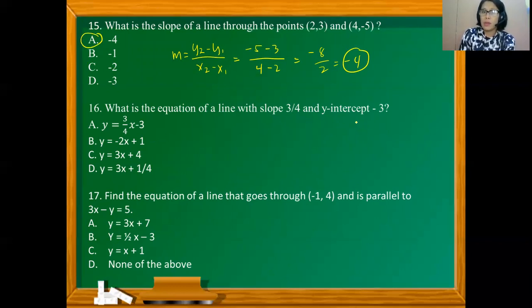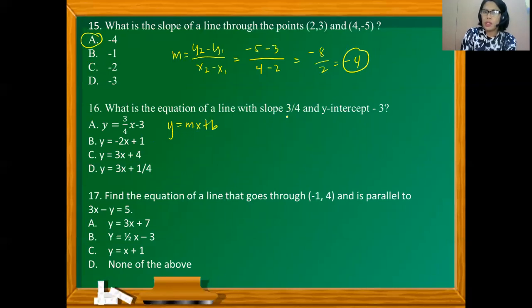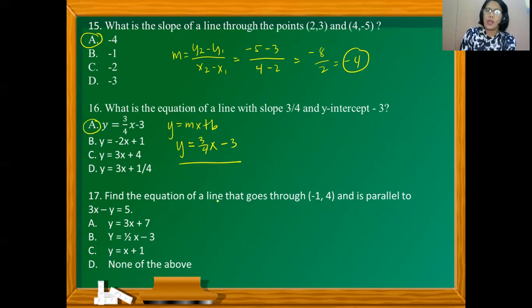What is the equation of a line with slope 3/4 and y-intercept negative 3? All choices are in slope-intercept form, so we substitute the given values. m is the coefficient of x, which is the slope, so the equation is y = (3/4)x − 3. The answer is option A.